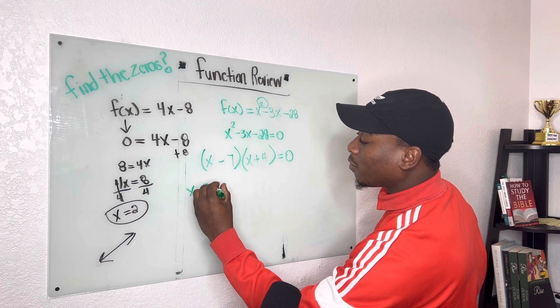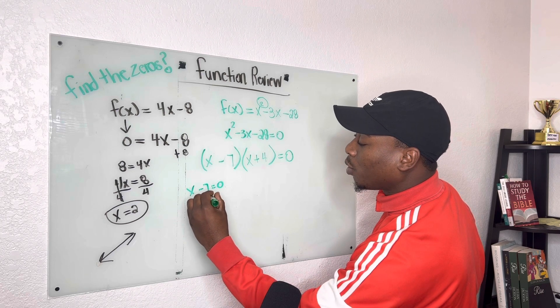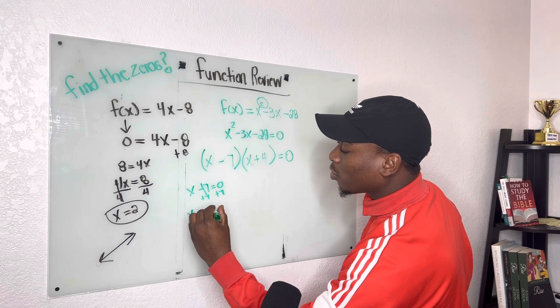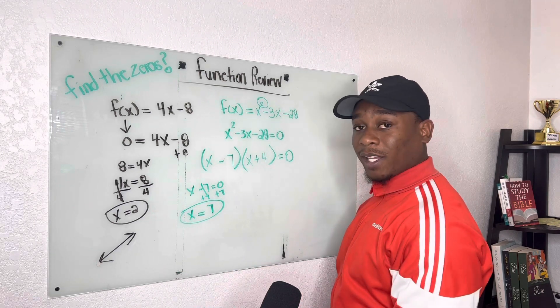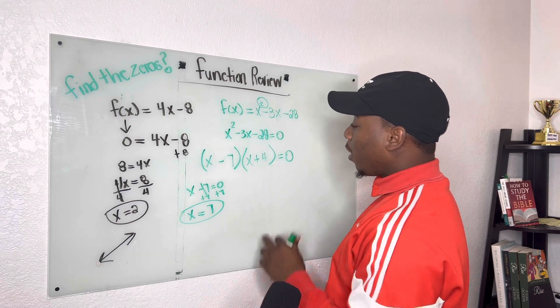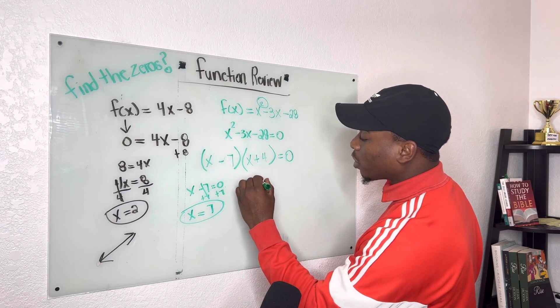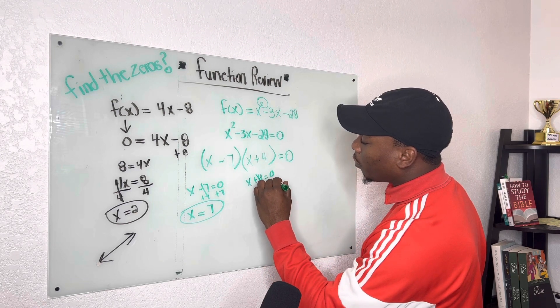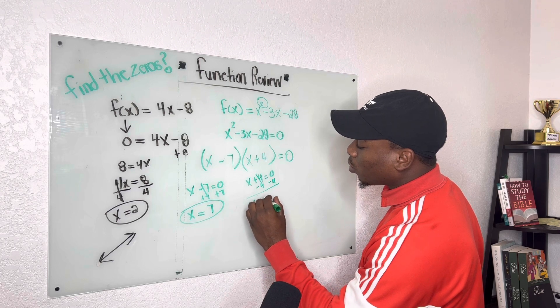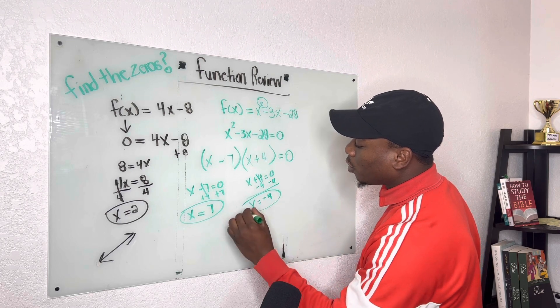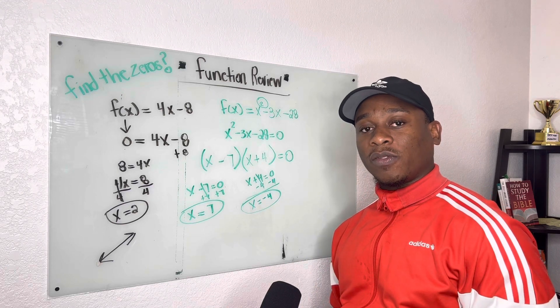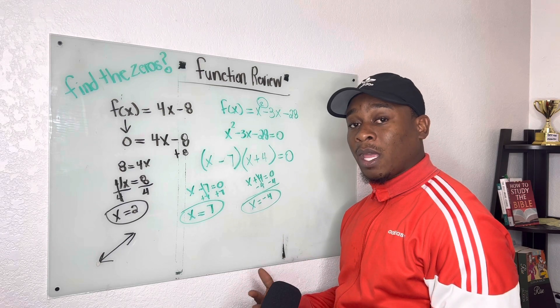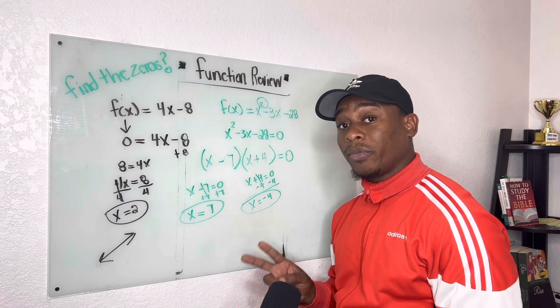So we have to put x minus 7 is equal to 0. And once we solve, we know that we're going to have an intercept. This line is going to cross the x-axis when x is equal to 7. And then when we go over here to the other side and repeat this process, we know that we're going to have another intercept when x is equal to negative 4. So as we're going on with this video, remember your exponent lets you know how many solutions, intercepts you're going to have. Because those are the same things.